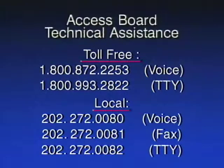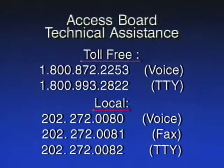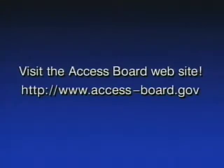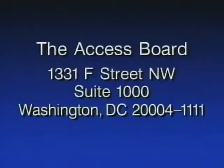Here are numbers to call for technical assistance from the Access Board. The toll-free number for voice is 1-800-872-2253. The toll-free TTY number is 800-993-2822. The local number for voice is 202-272-0080. The local number for fax is 202-272-0081. The local TTY number is 202-272-0082. Visit the Access Board website at www.access-board.gov. You can write the Access Board at 1331 F Street NW, Suite 1000, Washington DC, 20004-1111.